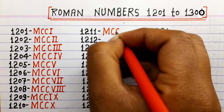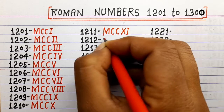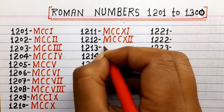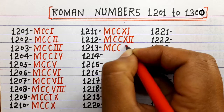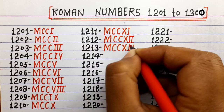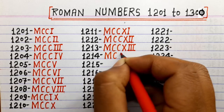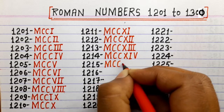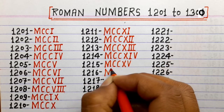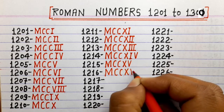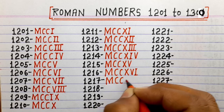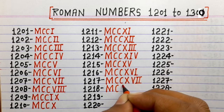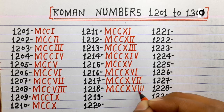1211 MCCXI, 1212 MCCXII, 1213 MCCXIII, 1214 MCCXIV, 1215 MCCXV, 1216 MCCXVI, 1217 MCCXVII, 1218 MCCXVIII.